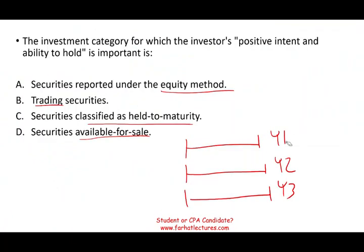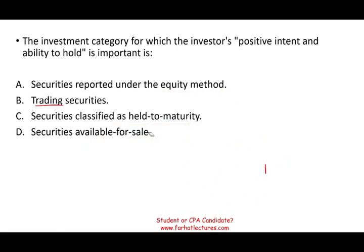Let's take a look at the first question. I usually start with what I consider easy, because on the CPA exam they generally go from easy to medium. The question: the investment category for which the investor's positive intent and ability to hold is important — is it the equity method, trading securities, held-to-maturity, or available for sale? Hopefully you can connect 'positive intent and ability to hold' with held to maturity.